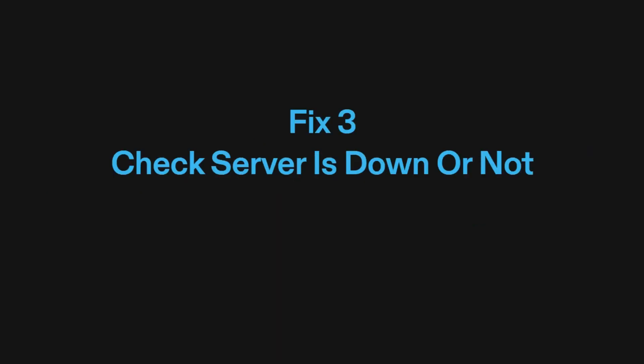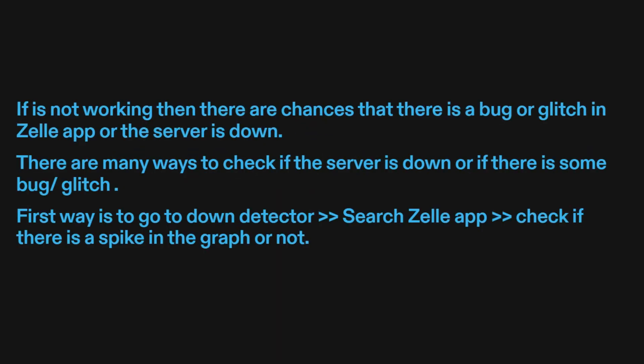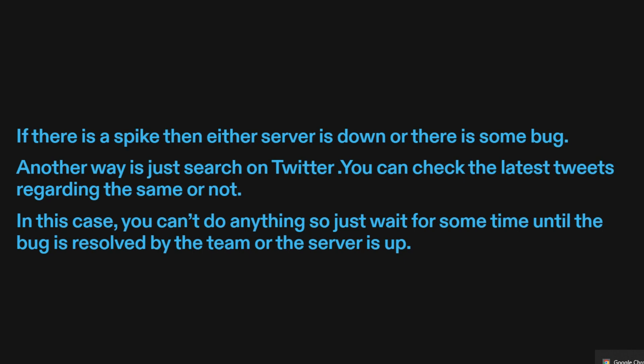Fix three: check if the server is down or not. If it's not working, there are chances that there is a bug or glitch in the Zelle app or the server is down. There are many ways to check this. First, go to Down Detector and search Zelle app. Check if there is a spike in the graph. If there is a spike, then either the server is down or there is some bug.